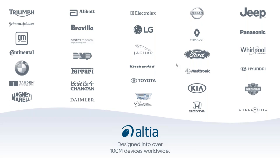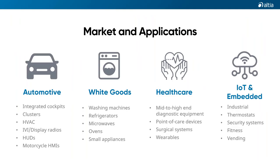We're very proud to work with so many great customers and partners. Here are a few examples of the brands using our products and services today. Altea is in over 100 million devices worldwide. The reliability and flexibility of Altea Design and Altea Deep Screen allows companies in all industries — from automotive to white goods, healthcare, IoT, and more — to create market-leading GUIs for their customers.